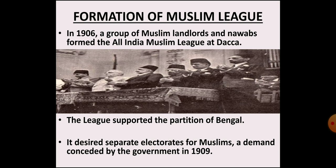Some other developments also occurred during the early 20th century. The All India Muslim League was formed at Dhaka in 1906 by some Muslim landlords and Nawabs. The League favored the partition of Bengal. It demanded a separate electorate for Muslims, which was accepted by the government through the India Council Act 1909, also known as the Morley-Minto Reforms. According to this act, some seats in the councils were reserved for Muslims — only Muslims could stand for election and they would be elected by Muslim voters only. This created a feeling among politicians that they could bring people of their religion to their support by offering favors to those religious groups.